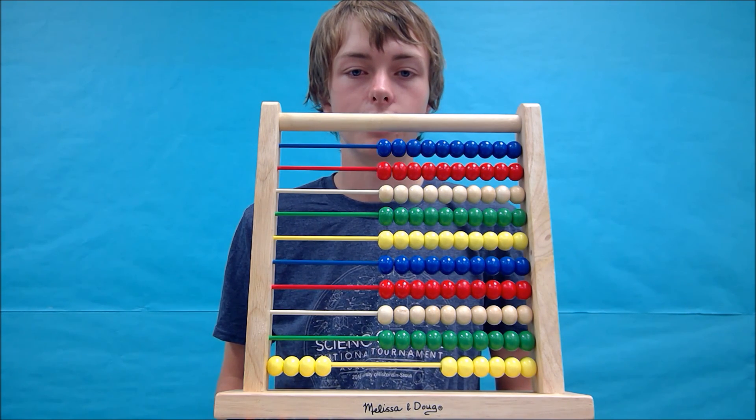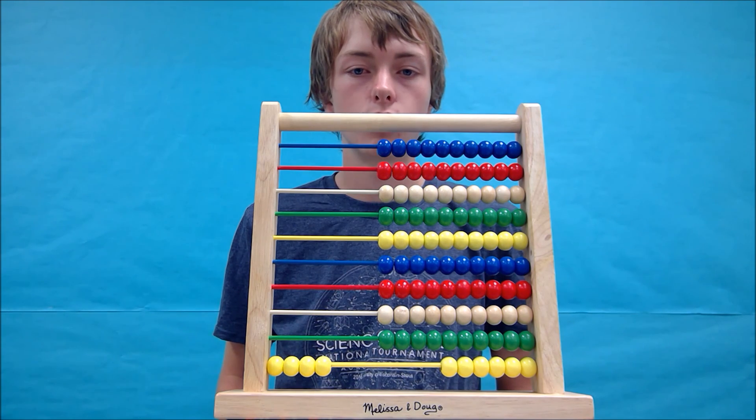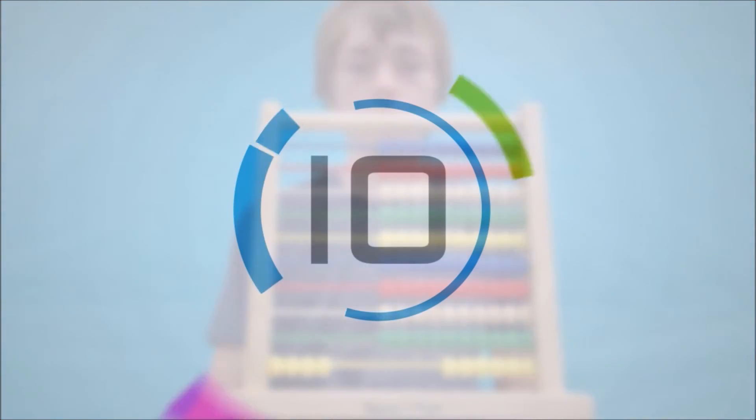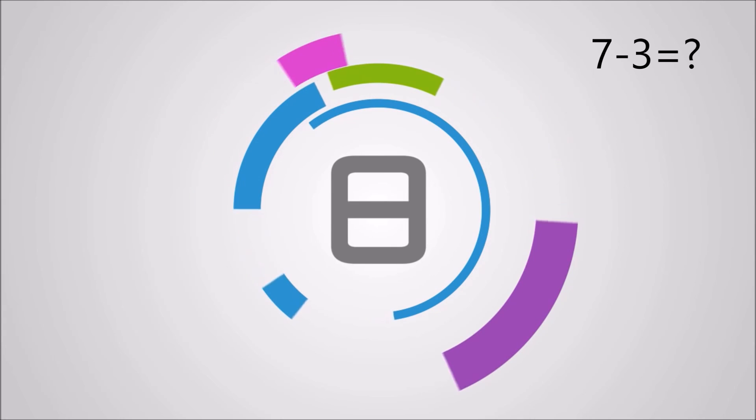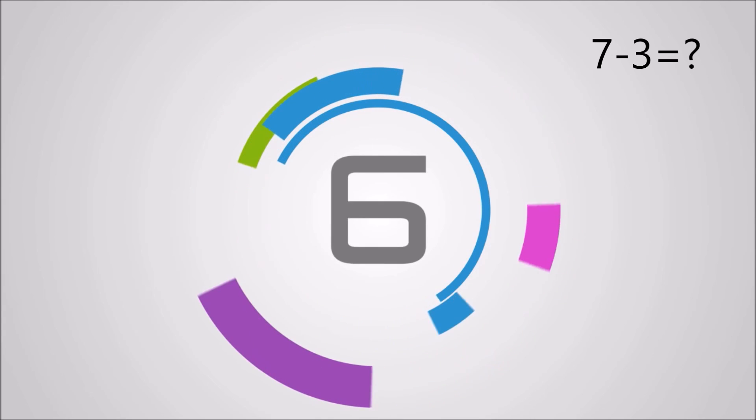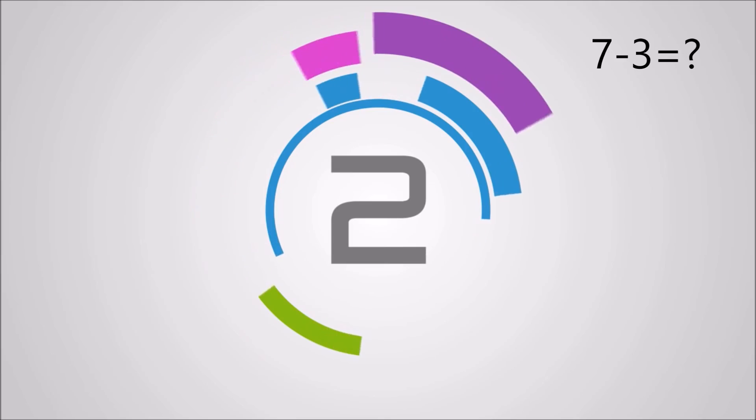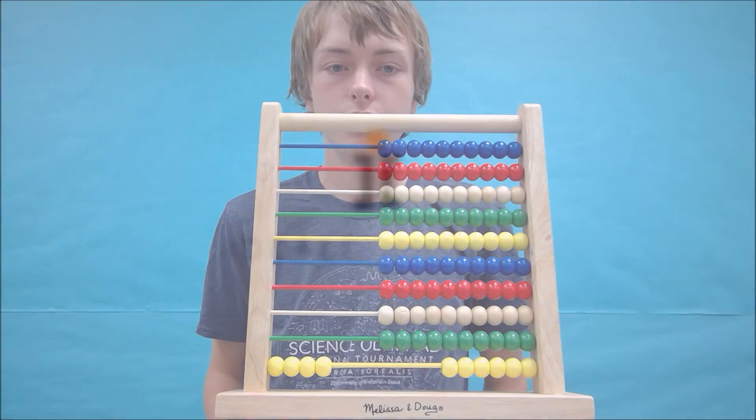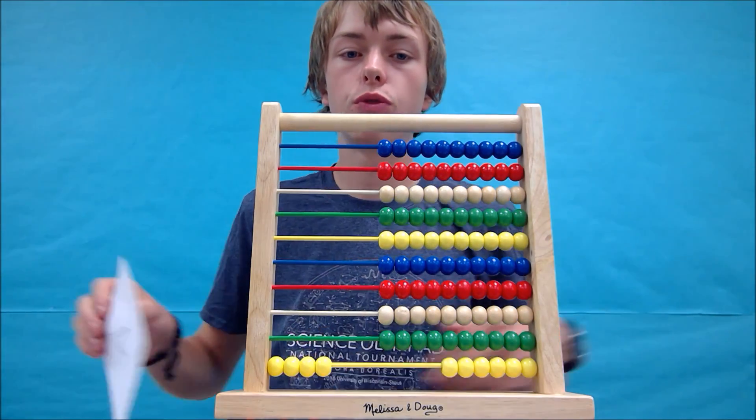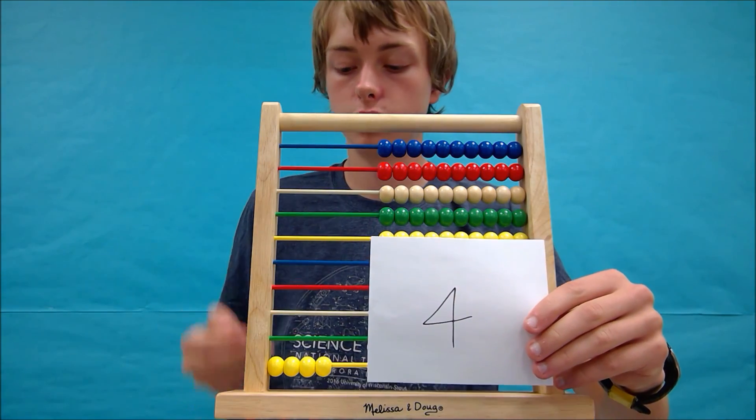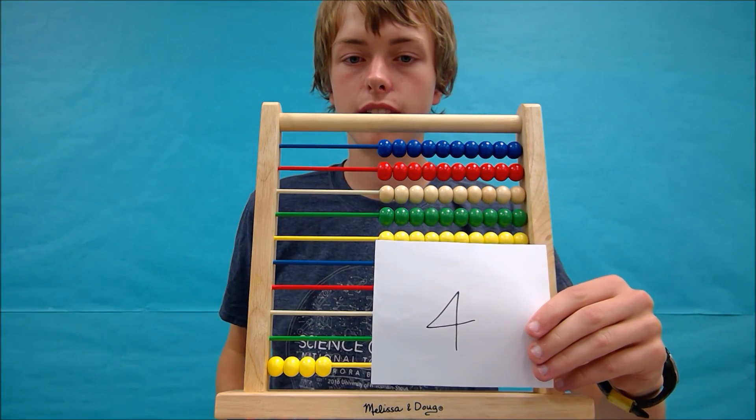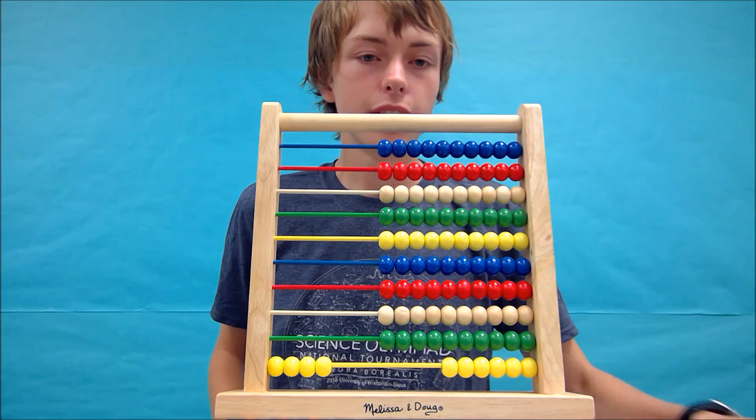Let's start by taking 7 minus 3. The answer you should have gotten was 4, and your abacus should look something like this. Did you get it? Great job.